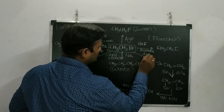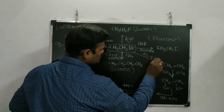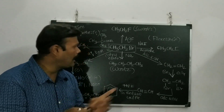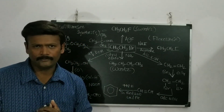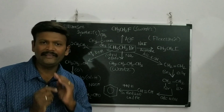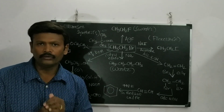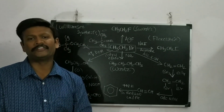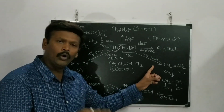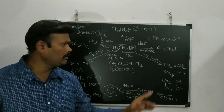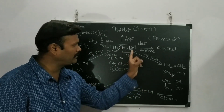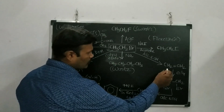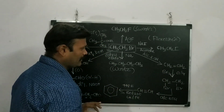To convert ethyl bromide into an alkene, we use alcoholic KOH. Using alcoholic KOH gives alkene as the product. If you are not familiar with the difference between aqueous and alcoholic KOH, please watch the previous video on that topic.